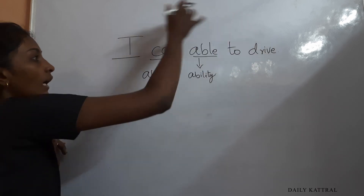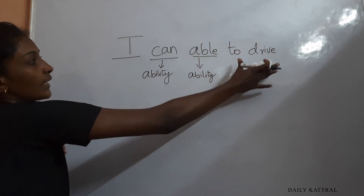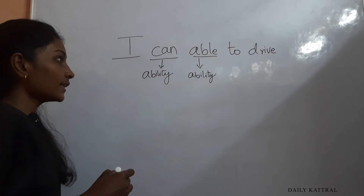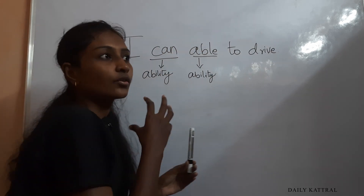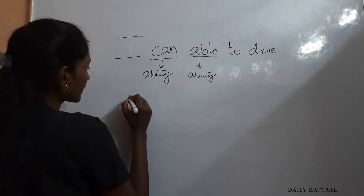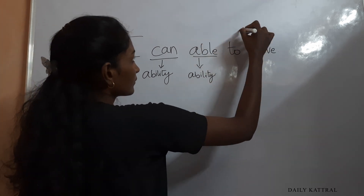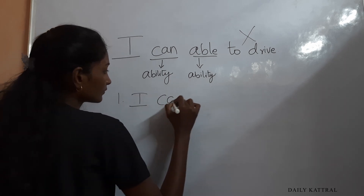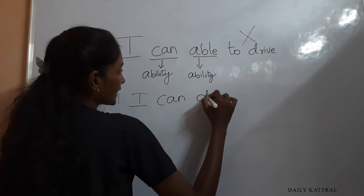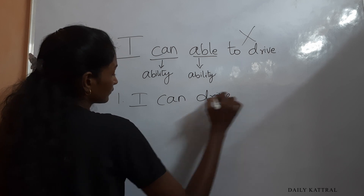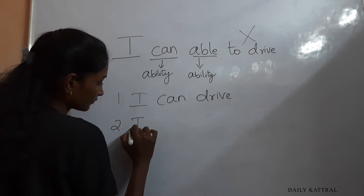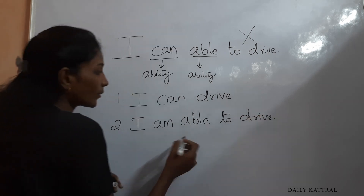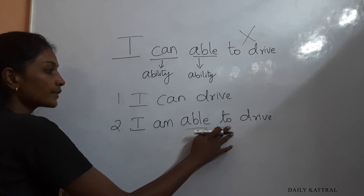You should say either 'I can drive' — using 'can' — or 'I am able to drive' — using 'able.' Both are correct on their own. Using 'I can able to drive' is a mistake because it combines two ability words in one sentence.